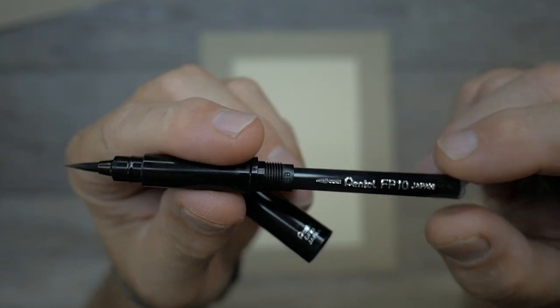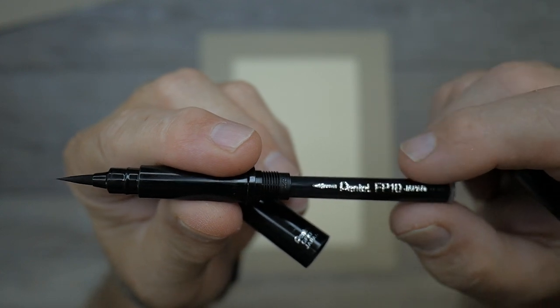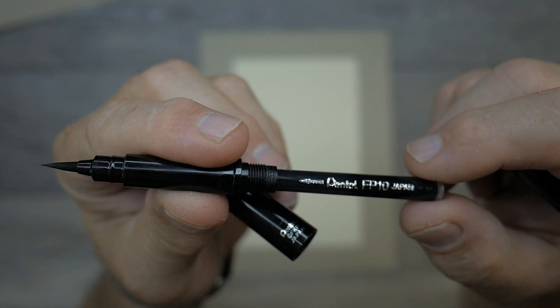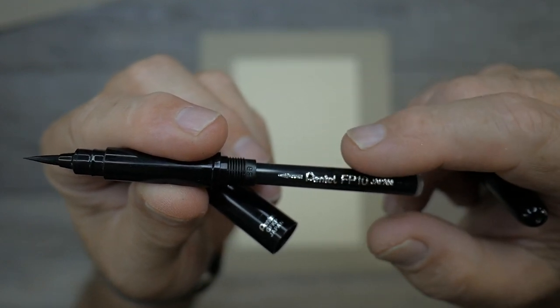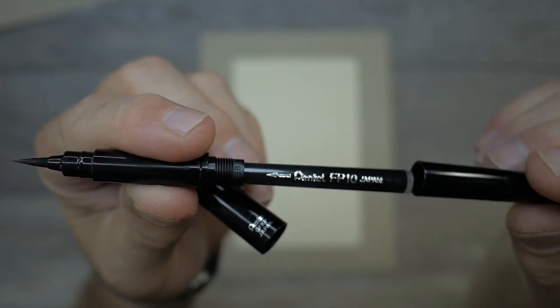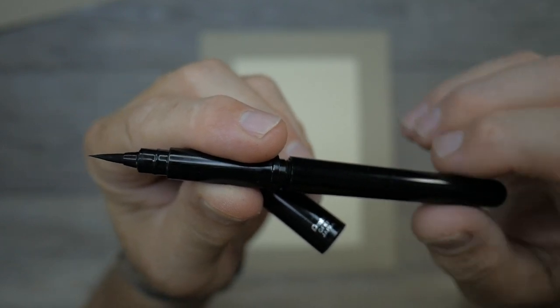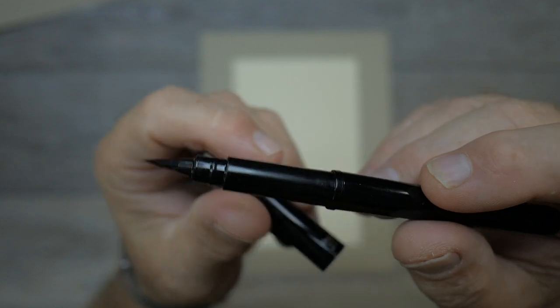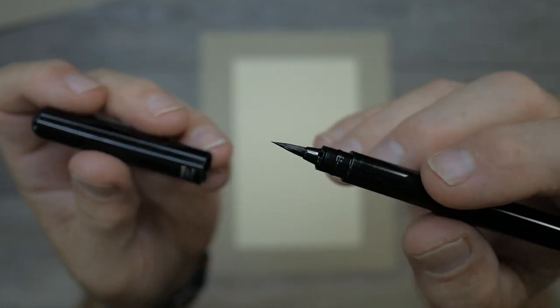This is the FP10 Pentel cartridge. You can buy these in packs and when they run out you can just pull them off and put a new cartridge on just like with a fountain pen. Artist and writer Austin Kleon uses these a lot. What he's done is with the empty cartridges he washes them out and then he refills these with colored fountain pen ink using a syringe.